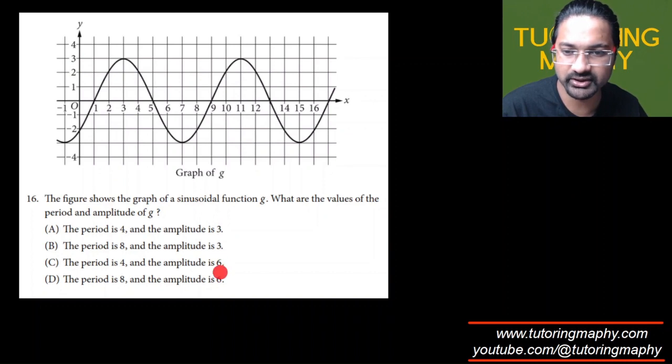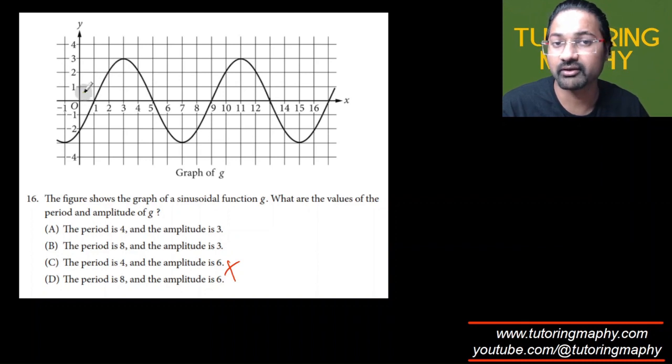From the middle it goes 3 units up because this is 3, so the amplitude is 3, which means that these two are incorrect. The last two are ruled out. And the time period is the time taken for one complete cycle. You can start the cycle from anywhere which you like, but make sure that obviously you complete at the same point. For example, let's say I start from here, so my one cycle will look like...